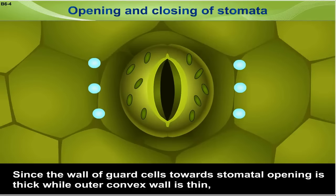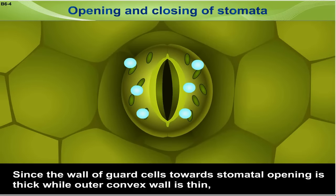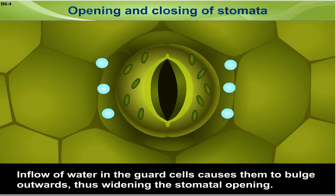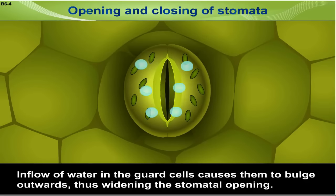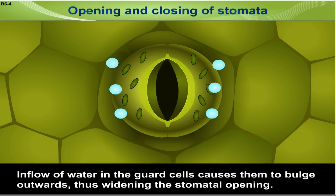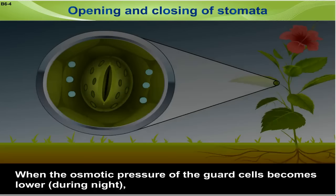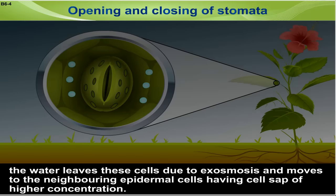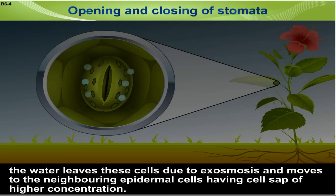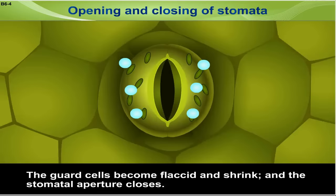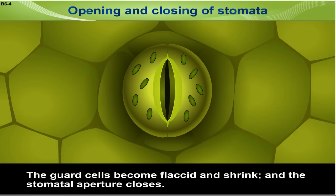Since the wall of the guard cells towards the stomatal opening is thick while the outer convex wall is thin, the inflow of water causes the guard cells to bulge outwards, thus widening the stomatal opening. When the osmotic pressure of the guard cells becomes lower during the night, water leaves these cells due to exosmosis and moves to the neighbouring epidermal cells, which have cell sap of higher concentration. The guard cells become flaccid and shrink, and the stomatal aperture closes.